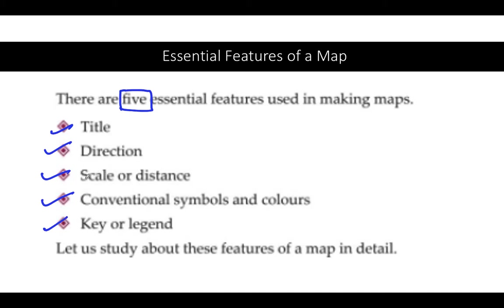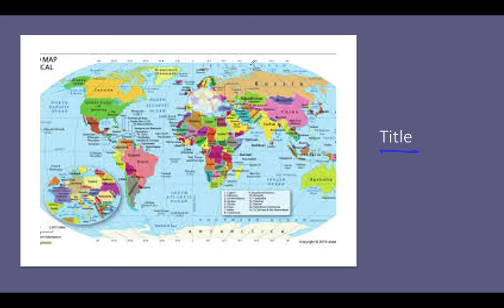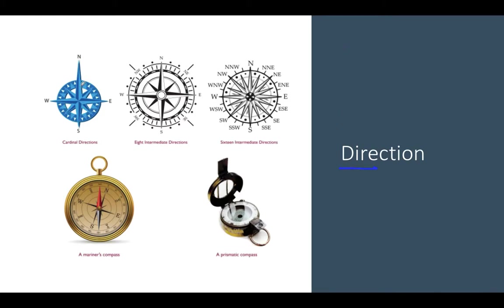A map should have a title — for example, 'World Map.' The next essential feature is directions. The top is called North, the bottom is called South, the right side is East, and the left side is West. We can further subdivide into eight intermediate directions: Northeast, Southeast, Southwest, and Northwest — in between each pair of cardinal directions.